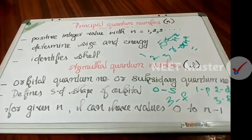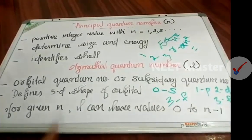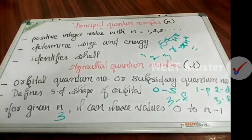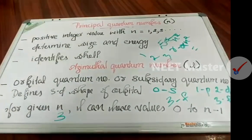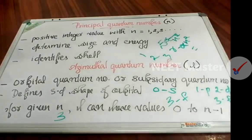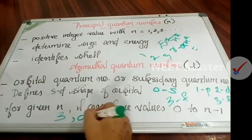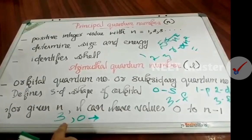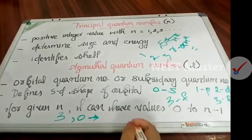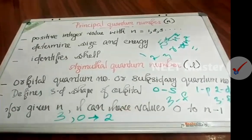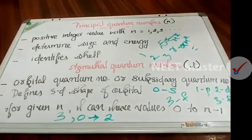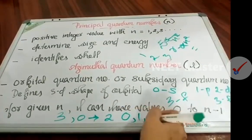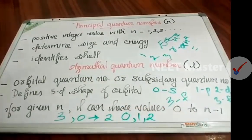If we have n equal to 3, we will have another shell. Then l can have values 0 to n−1, which gives us 0, 1, 2 — that is three possible values of l.